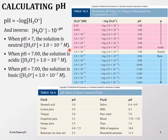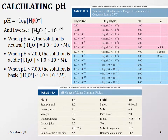When calculating pH, the formula is: pH = −log[H₃O⁺]. That is why you need to know the concentration of hydronium ion in the solution. Remember the pH has a range from 0 to 14.